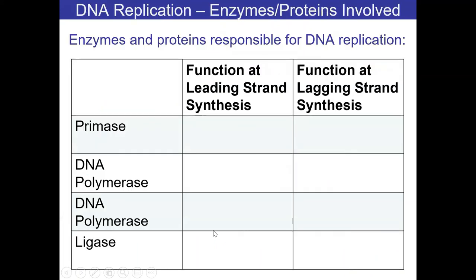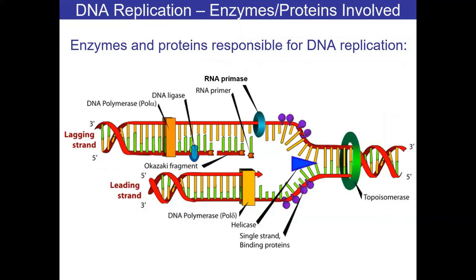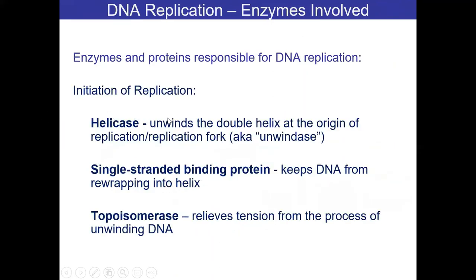We talked about DNA replication. There were six enzymes and proteins we talked about - make sure you know what these are. We've got DNA polymerase, ligase, primase, single-stranded binding protein, helicase, and topoisomerase. Plus there's an RNA primer, Okazaki fragments, and leading strand and lagging strand. I know it's super complex but it's important to learn. I will review this on Wednesday.